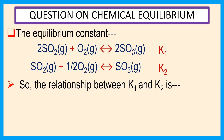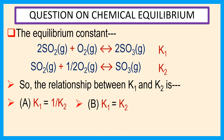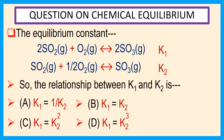Choices are: A, K1 is equal to 1 by K2. B, K1 is equal to K2. C, K1 is equal to K2 square. D, K1 is equal to root K2.